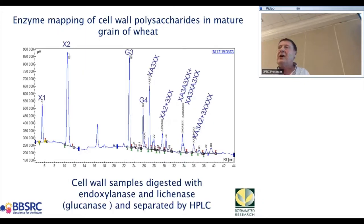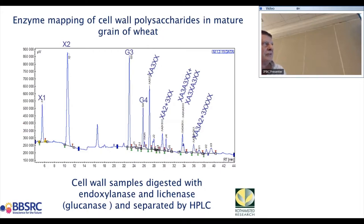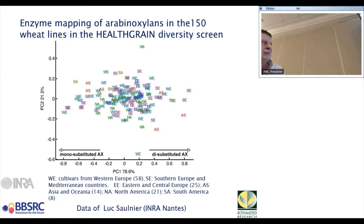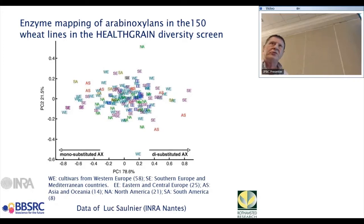Using both the xylanase and lichenase enzymes, we separate oligosaccharides on an HPLC and look at the peaks — the G3 and G4 glucan peaks, and various xylan peaks representing different structures of arabinoxylan oligosaccharides. This is a very clear fingerprint that we can treat as a data set for PCA analysis. When we do this, we get a very nice separation where the main first principal component separation is monosubstituted versus disubstituted, and the second separation is medium beta-glucan content — identifying fine structural differences in the polymers using a simple fingerprinting method.